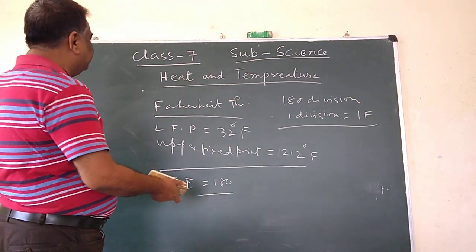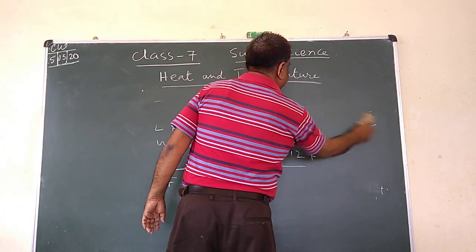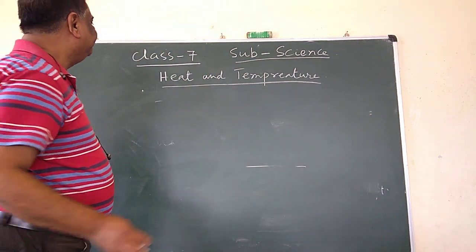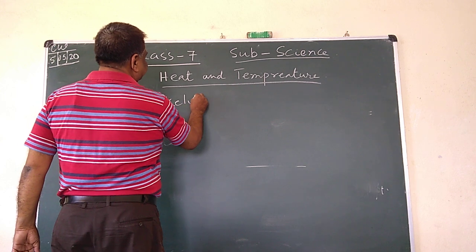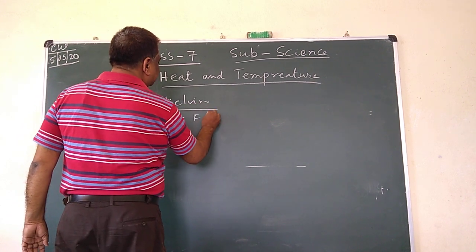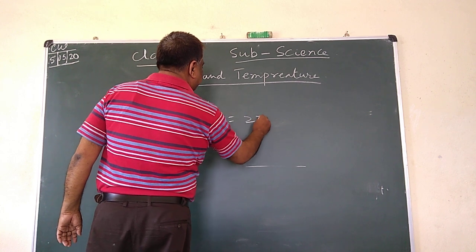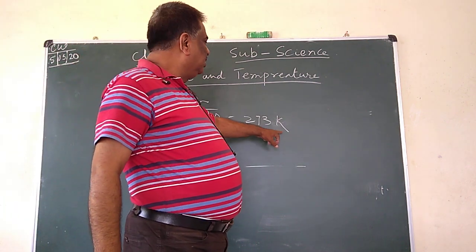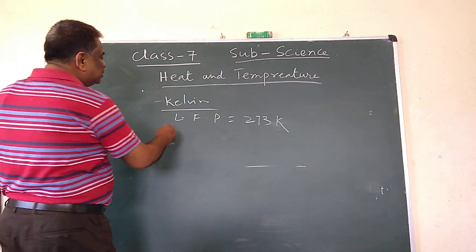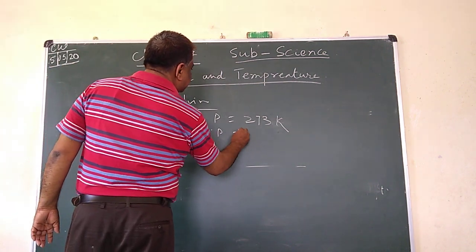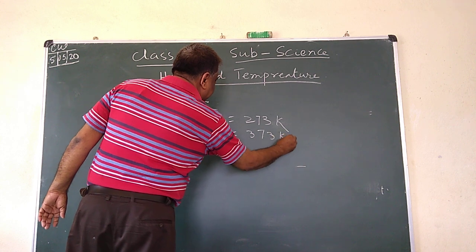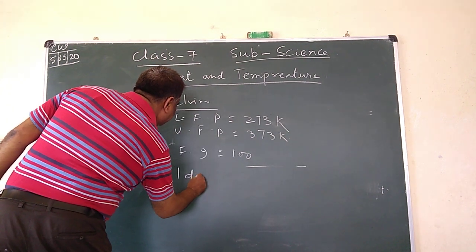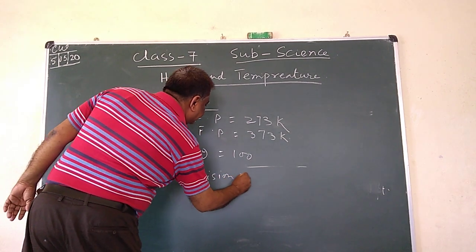For Kelvin, the lower fixed point is 273 K. You should note that you do not write 'degree' here — only Kelvin, written as K. The upper fixed point is 373 Kelvin. The fundamental interval is 100 and one division is equal to 1 K.